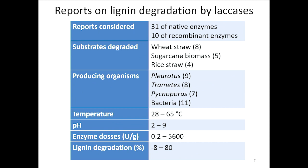About the producing organisms — the organisms from which we take the enzymes — the most common are white rot fungi. Pleurotus, Trametes, and Pycnoporus were the most used ones. There are also some reports about bacterial laccases used to degrade lignin, but we only found 11 works that use bacterial laccases.